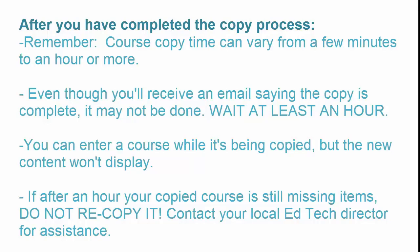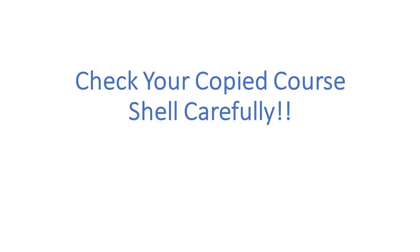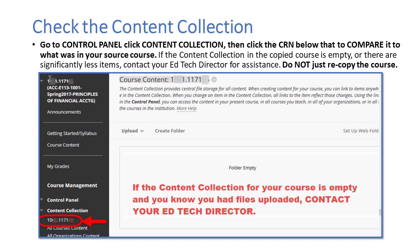If after an hour your copied course is still missing items, do not recopy it. Contact your local EdTech director for assistance. Once your course has been successfully copied, you're still not done. You have to check your course very carefully. The first thing to check is your content collection. Go to the control panel below your course menu, click Content Collection, then click on the CRN to see what is in the content collection for your copied course. Compare it to the content collection in your source course. If the content collection is empty or has significantly fewer items than your source course, contact your EdTech director. Do not simply recopy the course — that will not fix the problem.